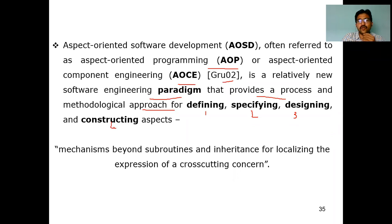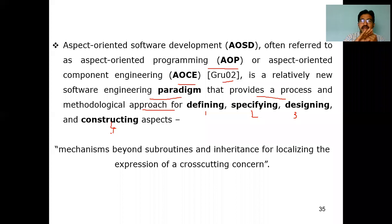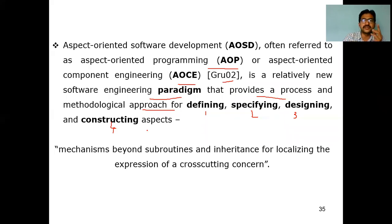The normal waterfall phases are: communication, modeling, construction, deployment, and testing — five different phases or activities. In the same fashion, AOC (Aspect Oriented Component Engineering) is one type of software engineering paradigm consisting of activities: first, defining; second, specifying; third, designing; fourth, constructing.